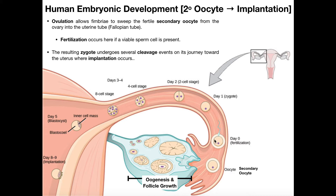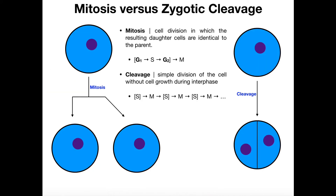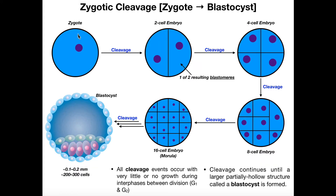By day one, that secondary oocyte post-fertilization has matured into a zygote. The zygote is going to divide — we're going to get a two-cell stage, a four-cell stage, and so on. However, this division of the zygote is not going to occur by mitosis. It's actually going to occur by a process called cleavage, which shares some similarities to mitosis but is very different. We're going to talk about cleavage and the general process of development from the zygote into something called a blastocyst.